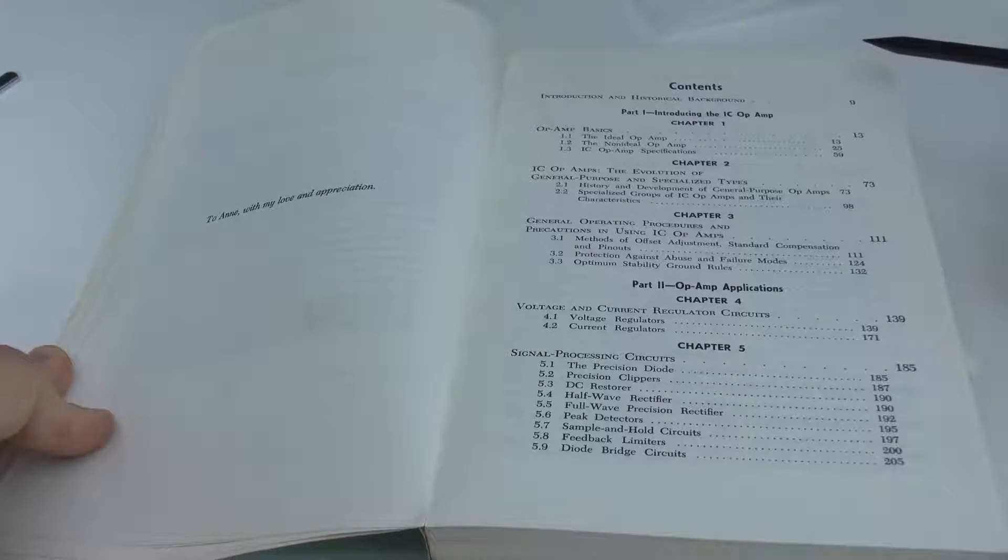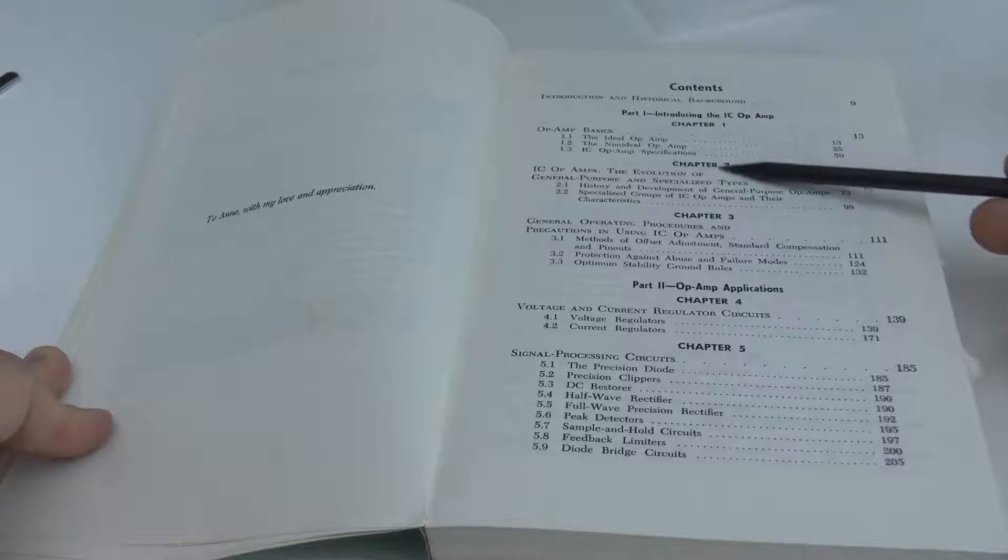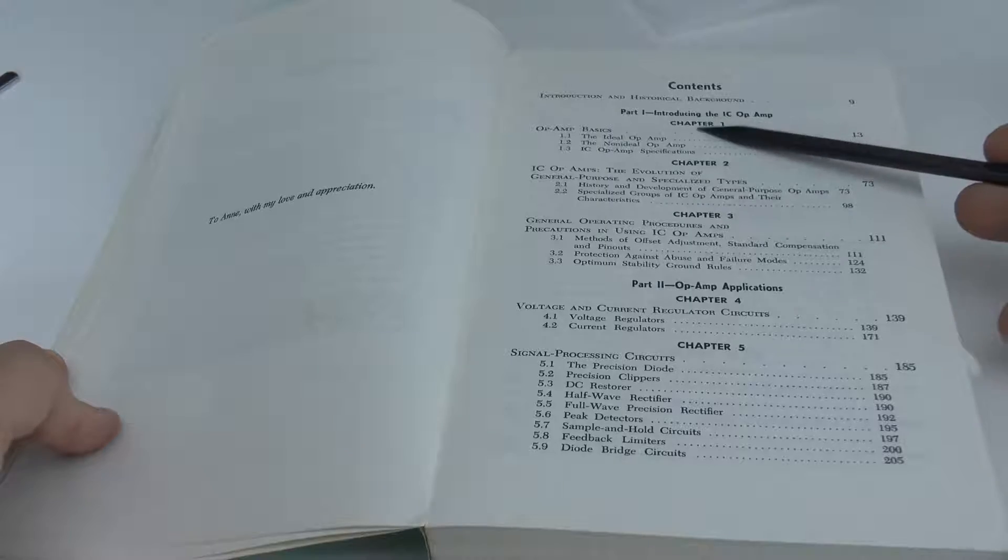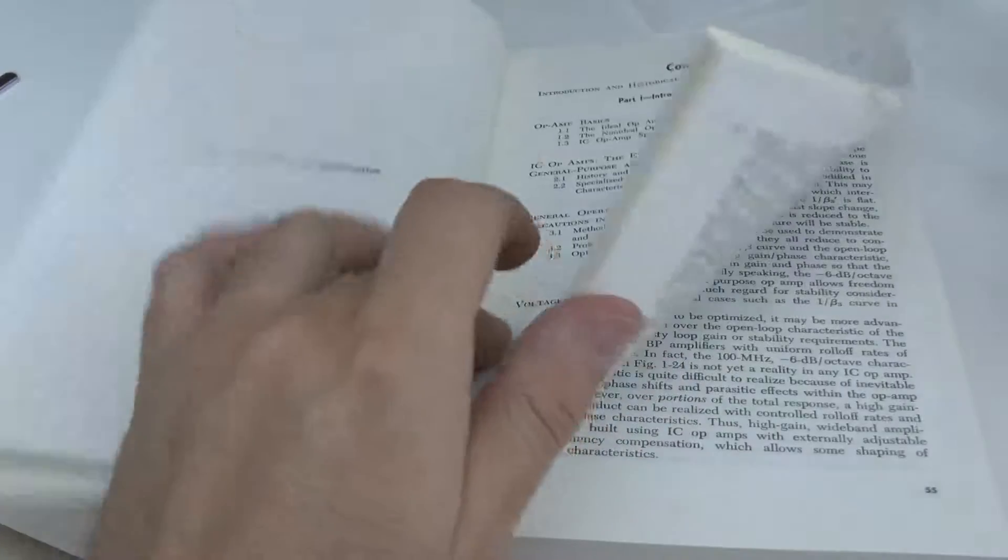Walt Jung divides his book into two parts. The first thing which you see here is basically a general introduction into the op-amp, like what's the ideal op-amp, what's its non-ideal properties and so on.